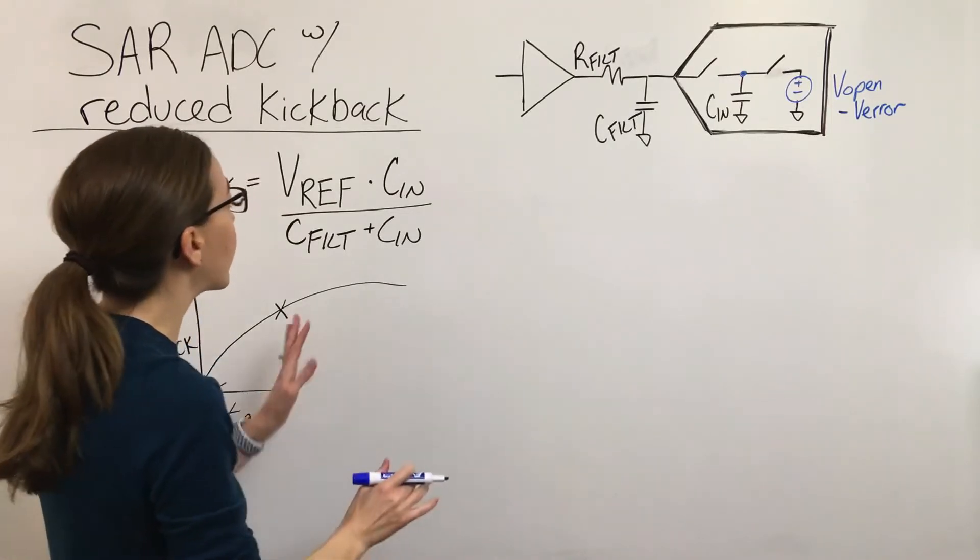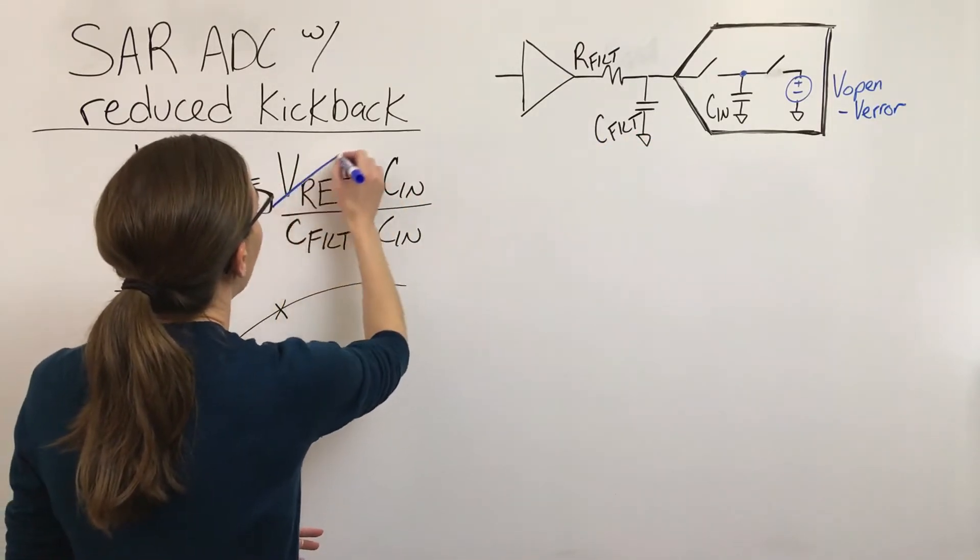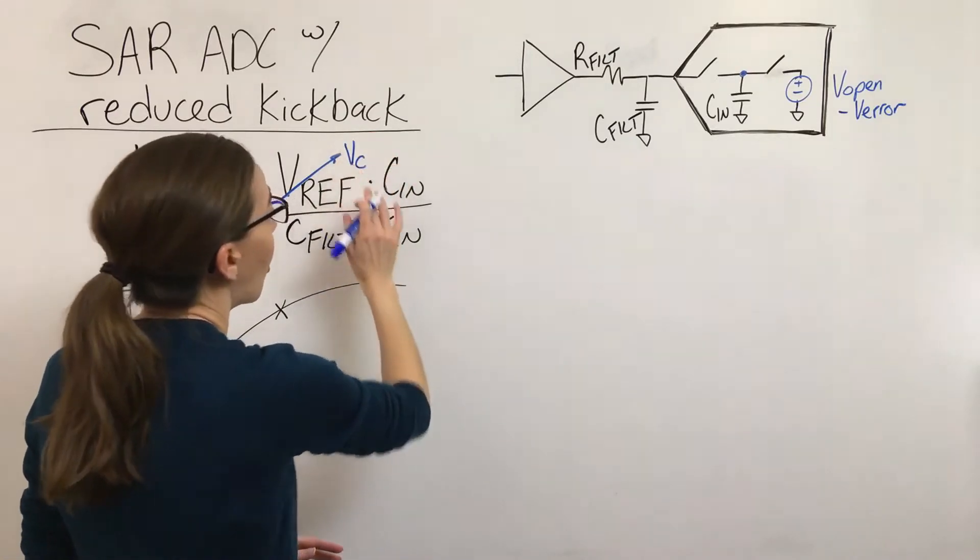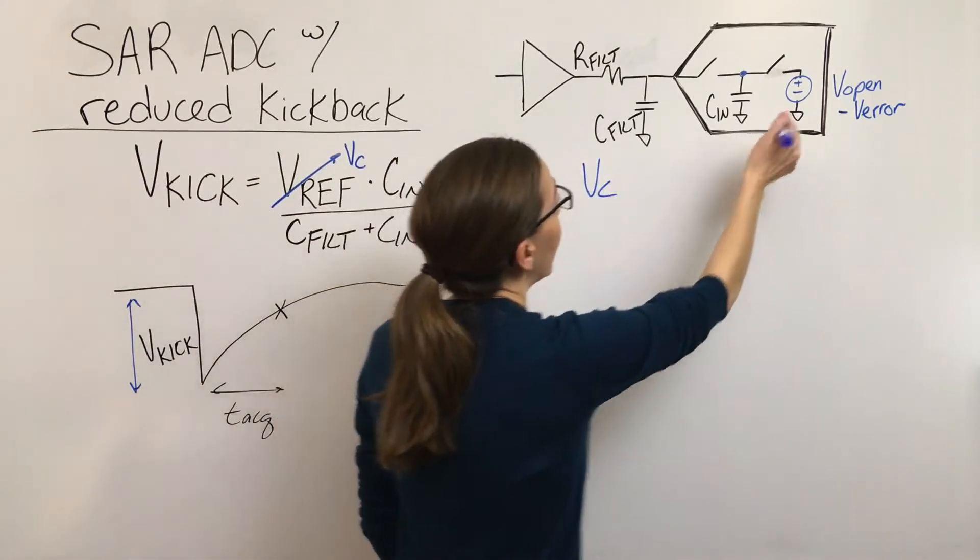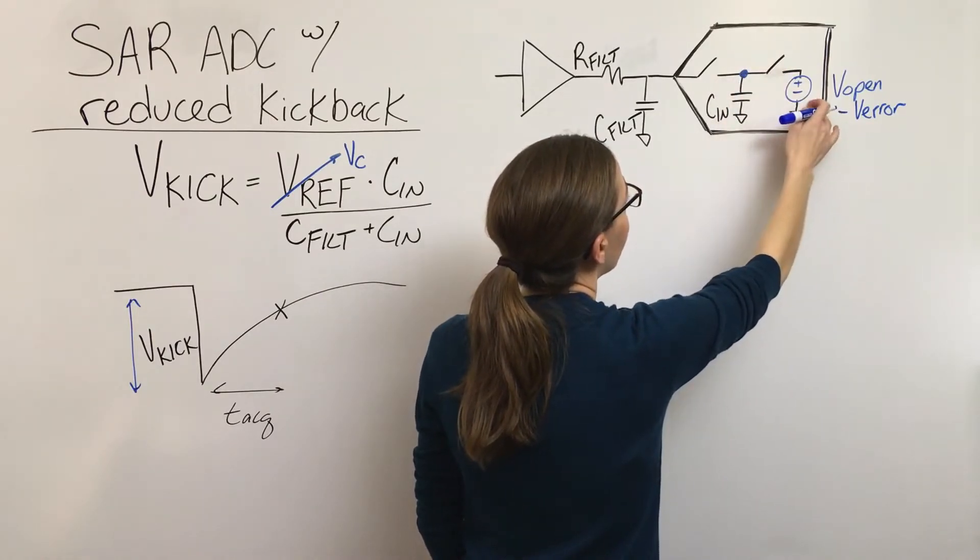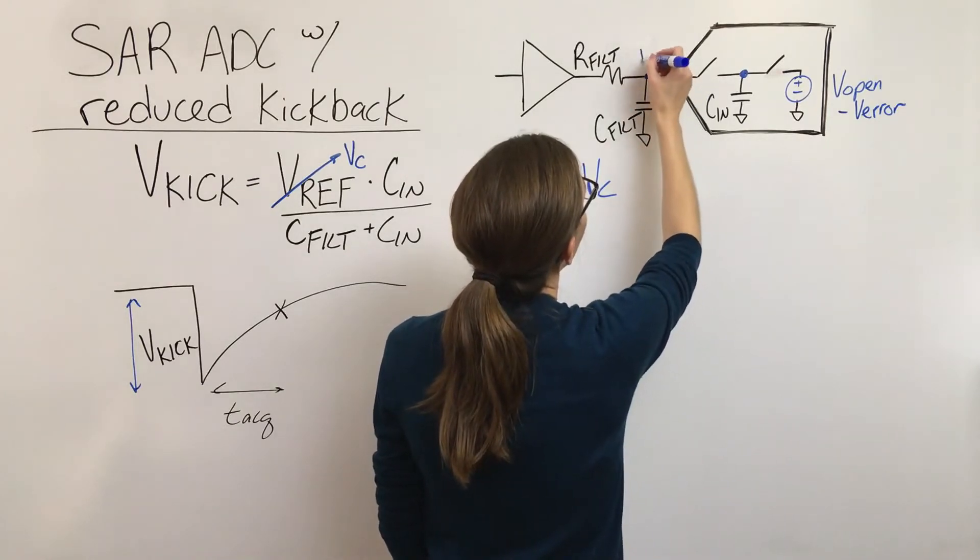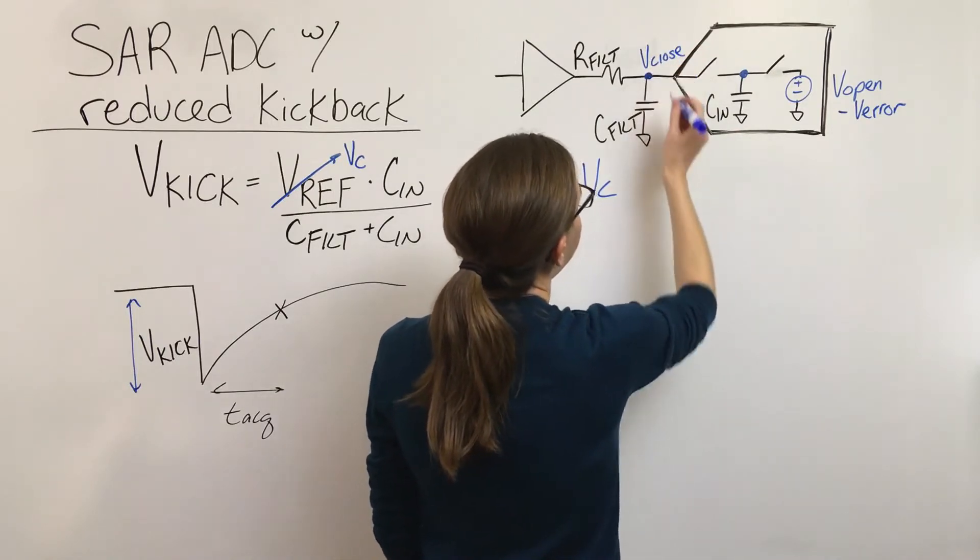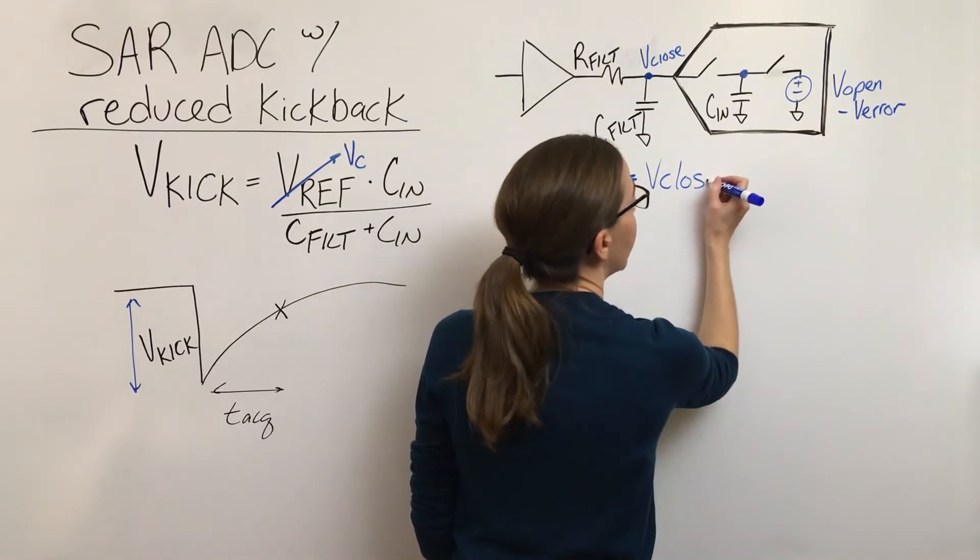So to come up with a formula for how we would describe this, I'm going to say, instead of assuming that the node is discharged to ground, let's come up with a different way to describe what this voltage is that drives the kickback. And so let's just call it VC. And so VC is going to be the difference between the voltage that's being driven here by this circuitry and then the difference between that and what the voltage is when the switch closes again on this node.